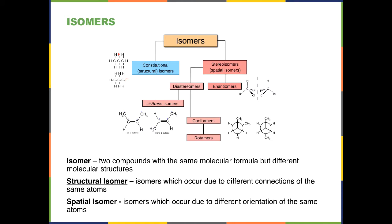Stereoisomers are isomers also known as spatial isomers, due to different orientations of atoms. There are two forms: enantiomers and diastereomers. Enantiomers are mirror images of each other. Diastereomers are not mirror images. One particular type of diastereomer is the cis and trans isomer. The cis isomer has CH3 groups on the same side — thus cis meaning same. In the trans isomer they are opposite each other. Rotomers are diastereomers in which there is a rotation around a central axis.